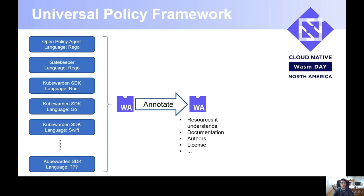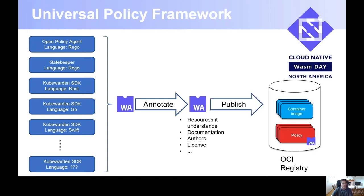By annotating, you can also add free-form documentation to the policy, such as authors, the license, or other information. Now we have this annotated policy file, and the next step is to publish it. Kubewarden supports OCI registries, and the good news is that you are already using them — because you are deploying containers inside Kubernetes and pulling container images from an OCI registry. If you have an OCI registry, you will be able to publish these policies to it. It works just out of the box — it's just an OCI artifact inside the OCI registry, right next to your container images. You don't need to do anything special to support policies inside your OCI registries.